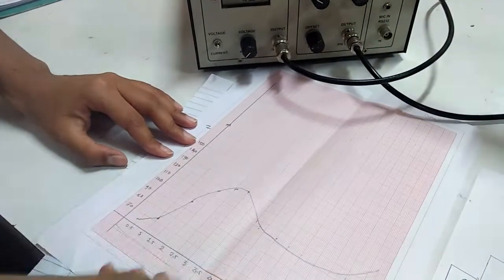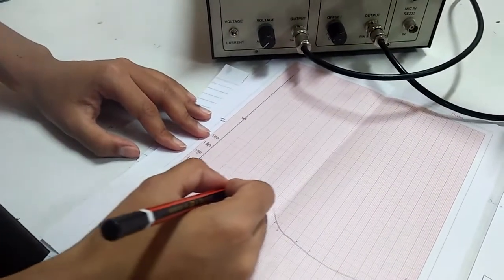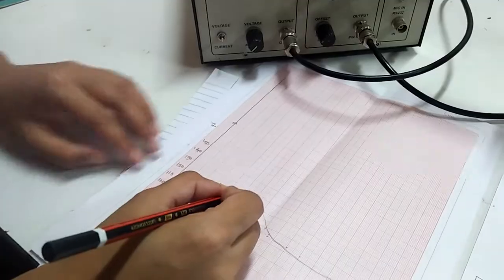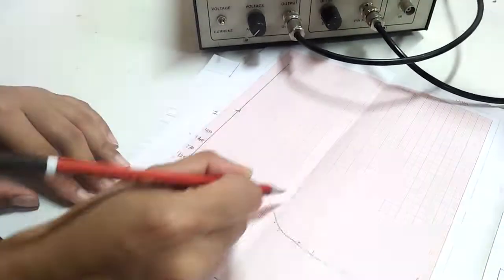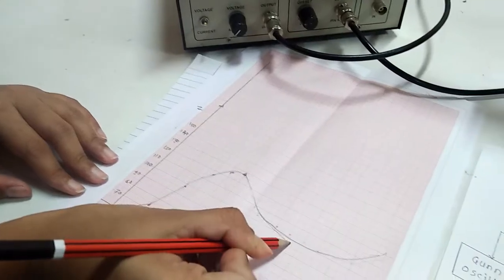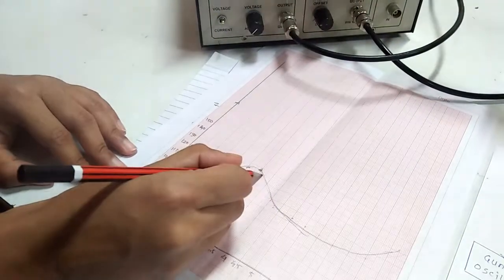As we see from graph, initially our voltage is proportional to current. At 3 volt we get threshold and then we obtain negative resistance region, means the voltage increases but the current decreases.